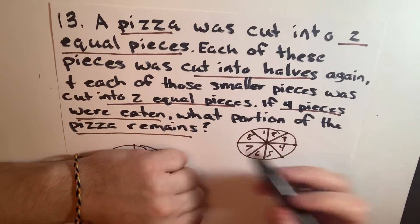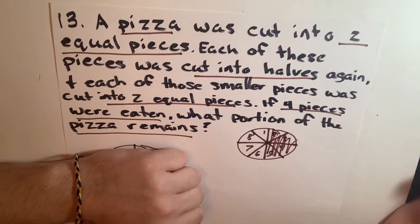Now the question says if four pieces were eaten, so let's cross those off. They're no longer there.